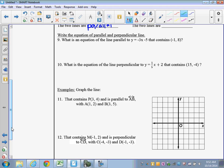So let's move on to number 9. Here we're asked to write an equation of a parallel and perpendicular line. So write the equation of parallel and perpendicular lines. So it says, what is the equation of the line parallel to Y equals negative 3X minus 5? So what is an equation of the line parallel? So number 9 just asks us for parallel.